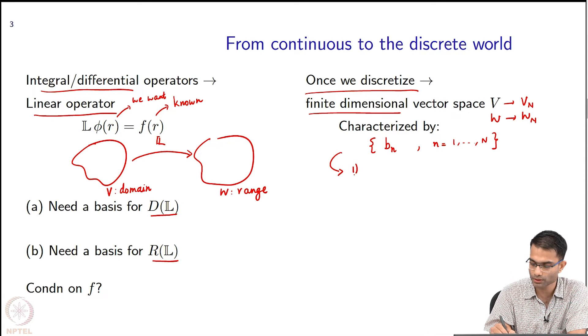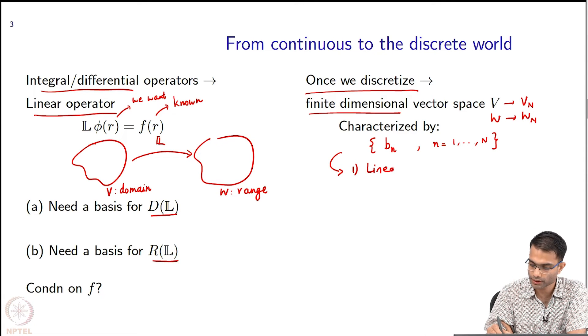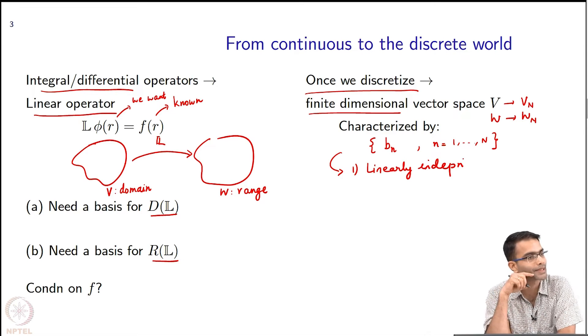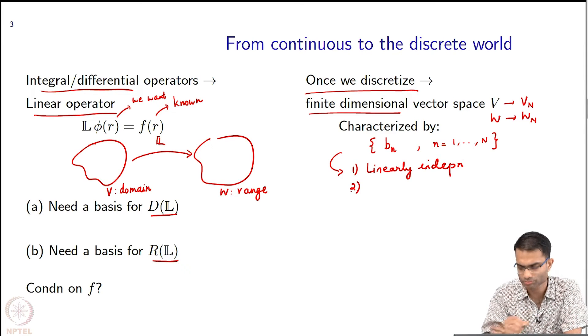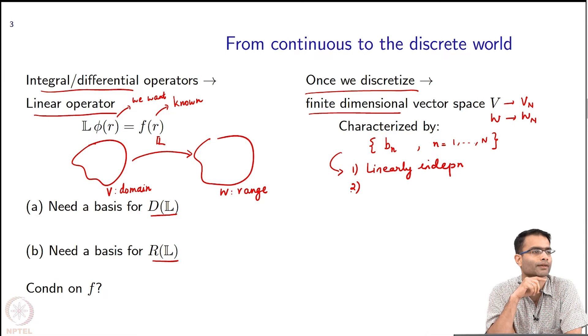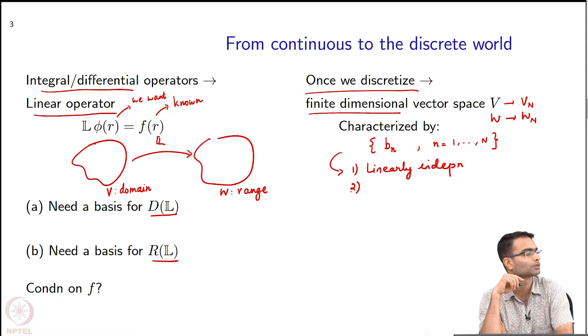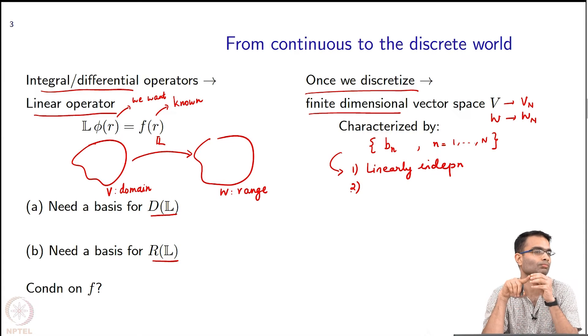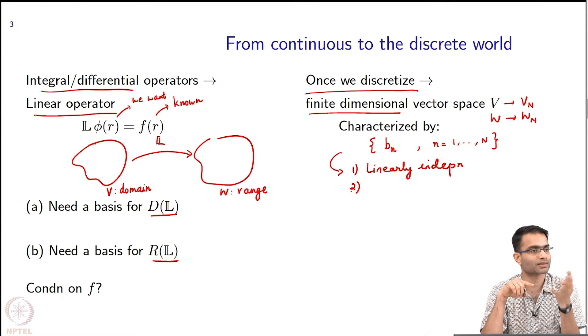First is that they should be linearly independent, right? Second: orthogonal. Need not be orthogonal. I can have non-orthogonal basis also. So when will I call a set of vectors a basis for a vector space?